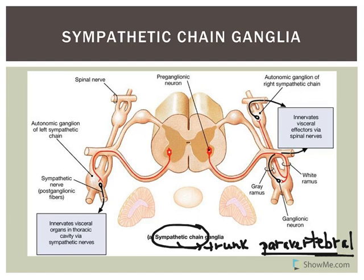The gray rami communicantes run throughout the length of the sympathetic chain and are not restricted to T1 to L2. The pre-ganglionic neurons may need to travel up or down to synapse with more than one cell body located in the sympathetic trunk ganglion. The post-ganglionic fibers then travel again along the gray rami communicantes to their target structures.